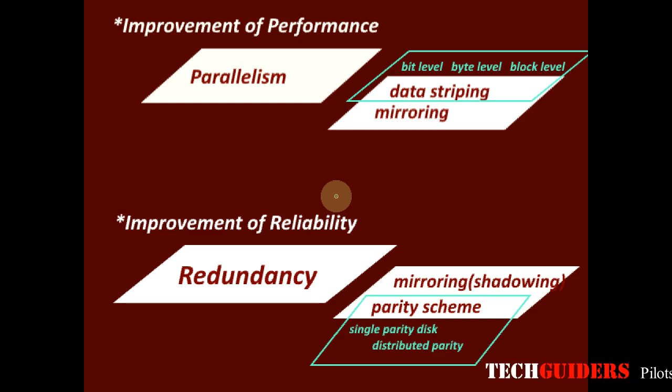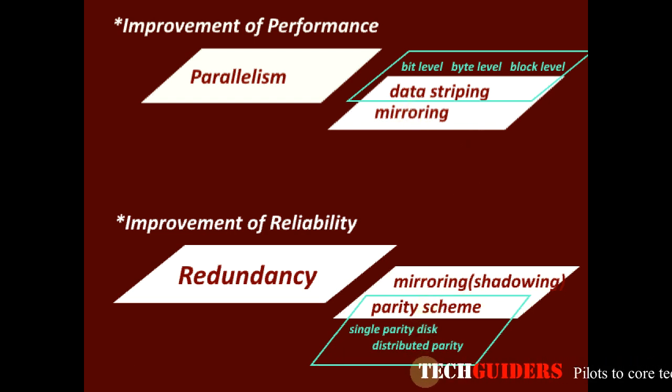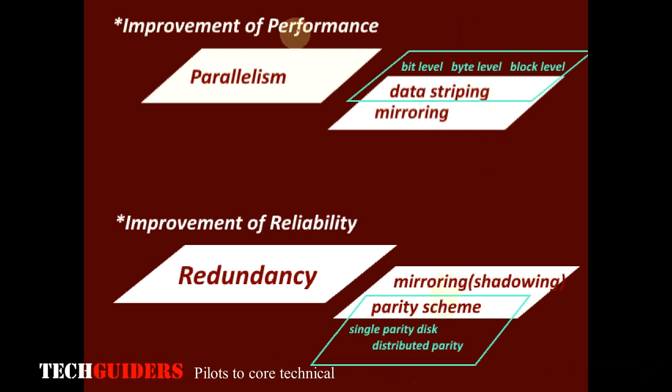As discussed in the previous video, in RAID different methods are available and in each method there are different options too. Each RAID level makes use of a particular combination of these methods and options within the method depending on the required performance, required redundancy and required capacity. Now let's discuss the RAID levels one by one.